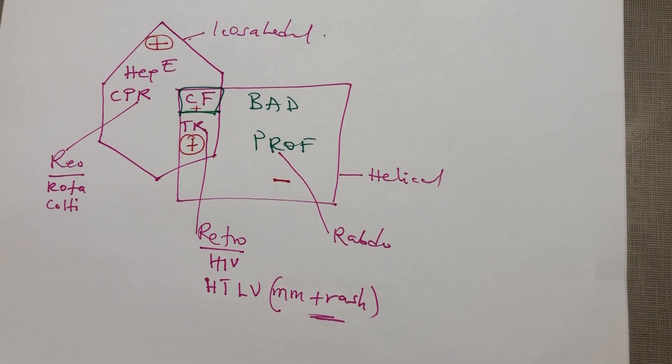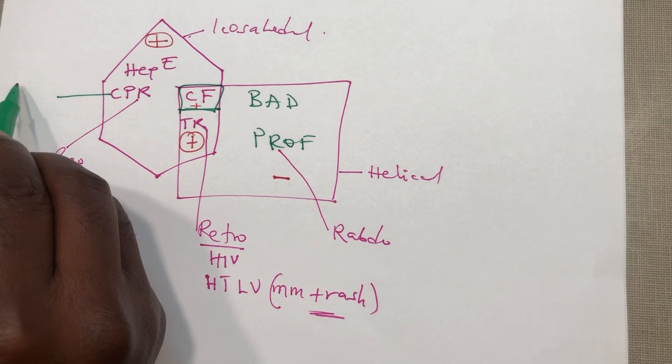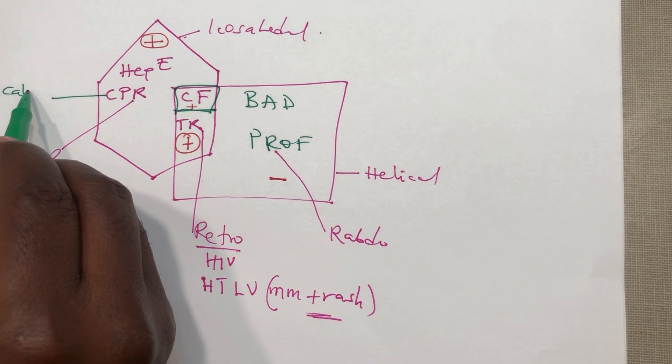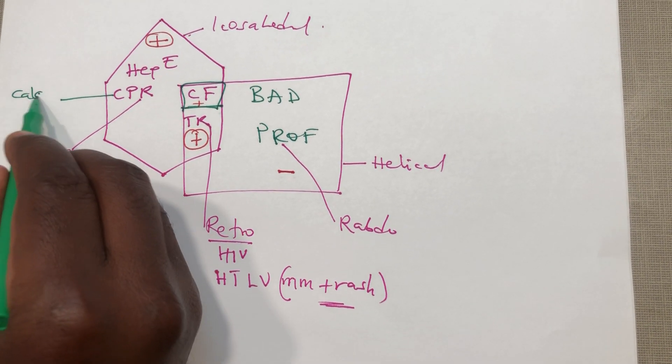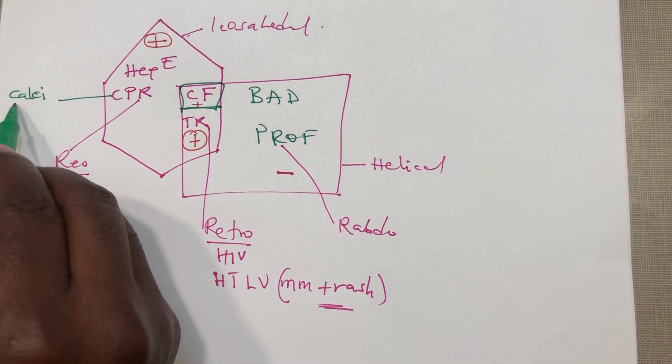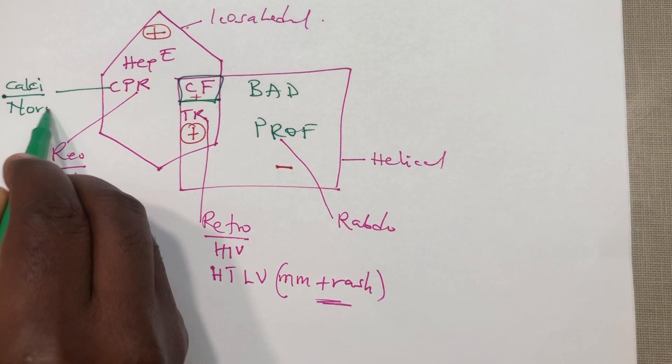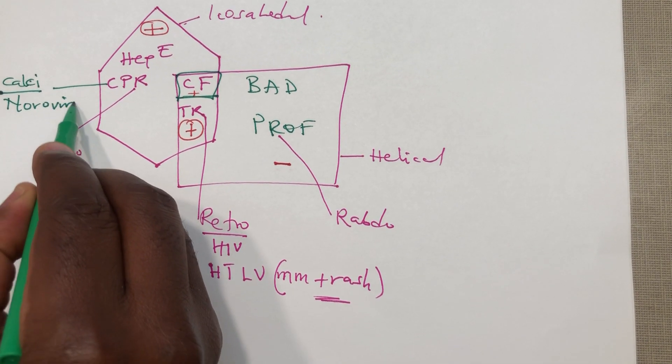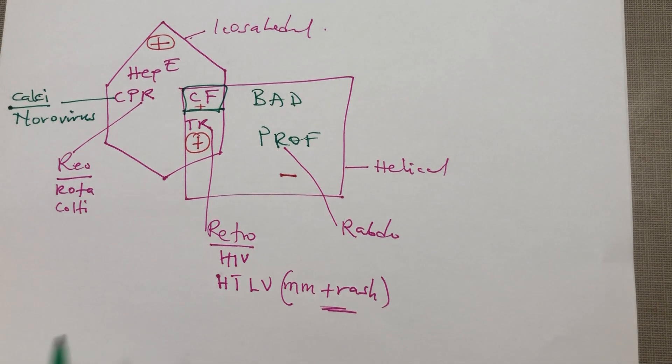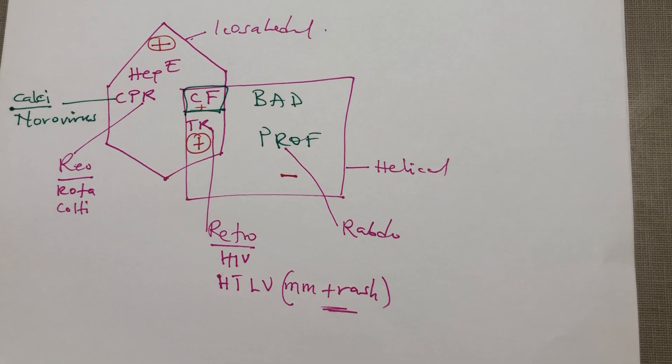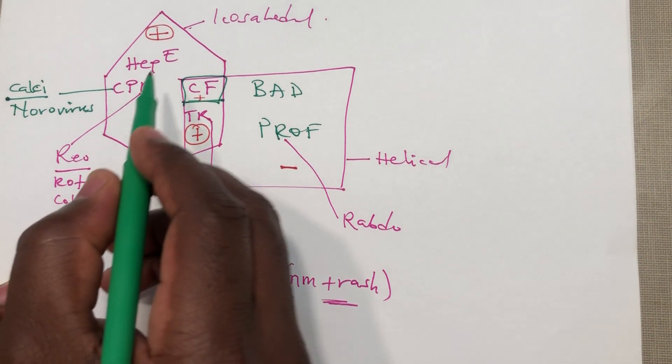The next one is the calicivirus. Under them we have the norovirus. The next one is the P over here, the P is the picornavirus.